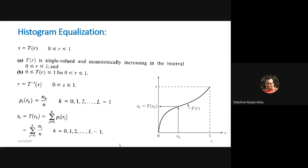The first operation we will talk about is histogram equalization. If we consider a transformation function T(r), we can write s = T(r) where r belongs to the input pixel. If we consider r as normalized pixel values — that is, normalized between 0 and 1 — then r will fall between 0 and 1. Here, capital T is the transformation operator applied to the normalized input pixel to get the output level s, which is a mapping from input image pixels to output pixel level s.